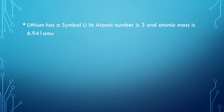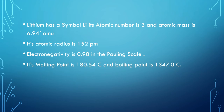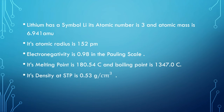Moving ahead with the numbers: lithium has the symbol Li, atomic number 3, and atomic mass 6.941 amu. Its atomic radius is 152 picometers, electronegativity on the Pauling scale is 0.98, melting point is 180.54°C, and boiling point is 1347°C.